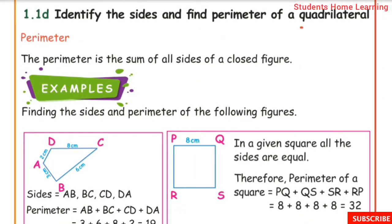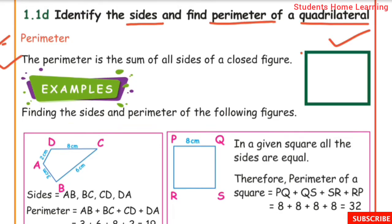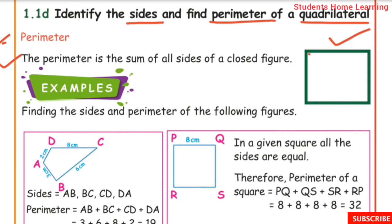Identify the sides and find the perimeter of a quadrilateral. The perimeter is the sum of all sides of a closed figure. To find the perimeter, we need to add all the sides of the quadrilateral.